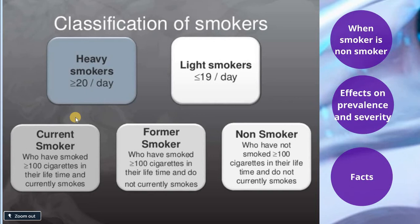In general, we have smokers and non-smokers. In more detail, we have heavy smokers who smoke more than 20 cigarettes a day, and light smokers who smoke less than 20 cigarettes a day. Current smokers are those who have smoked previously more than 100 cigarettes in their lifetime and are currently still smoking. Former smokers have smoked more than 100 cigarettes in their lifetime and are now quitting — they are currently non-smokers.